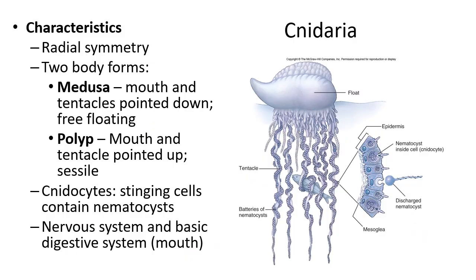Cnidaria have radial symmetry. Generally in their life cycle a cnidarian will have a medusa and a polyp form, but one will often be dominant — in jellyfish the medusa form is dominant, in corals the polyp form is dominant. They are characterized by stinging cells called cnidocytes, which hold nematocysts with poison inside to sting, hurt, and kill prey, and also serve as a defense mechanism.